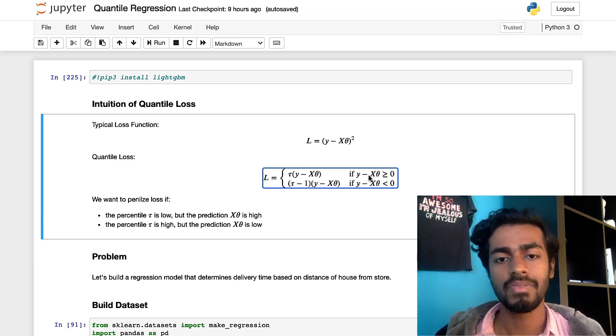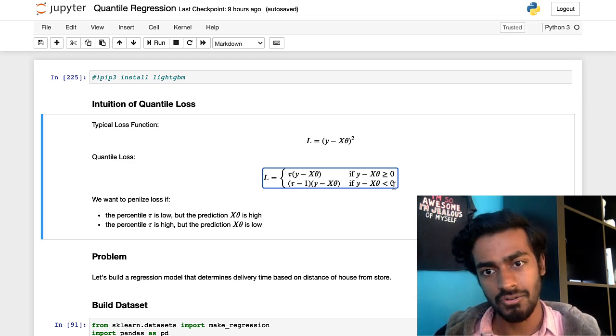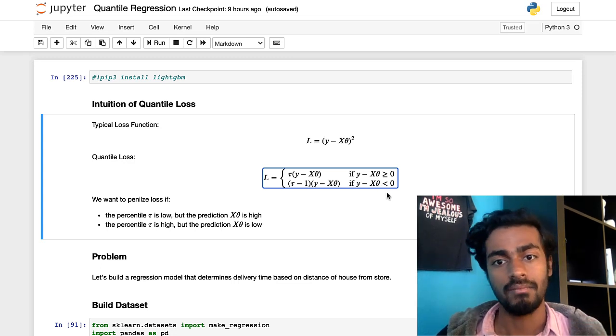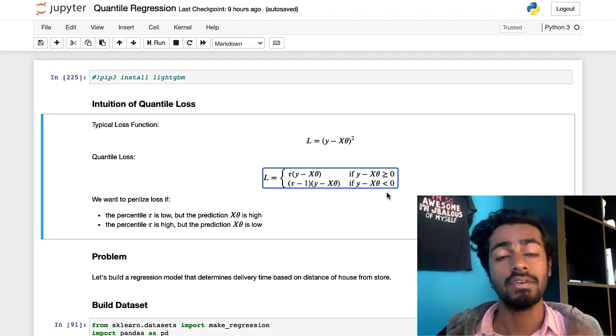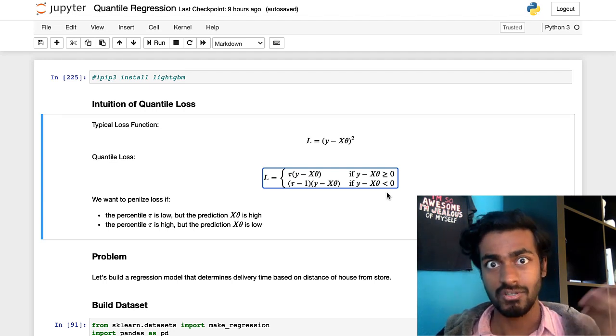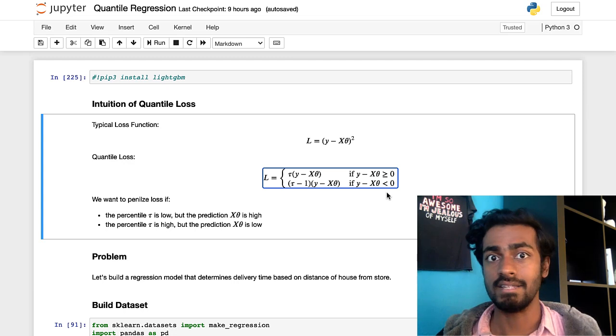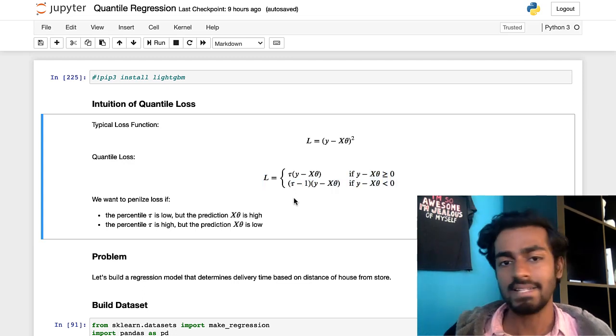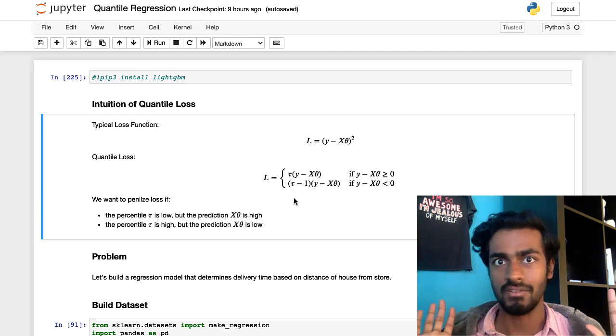And the exact opposite is true for the second line that we see here. So if y minus theta x is less than zero that means that the prediction is much higher than the label which is only good for higher percentiles or higher quantiles and we want to penalize it for much lower quantiles and we're saying tau minus one instead of one minus tau because we want this product to be a positive number and that's it actually that is all about the quantile loss. If you understood this you understood the math.